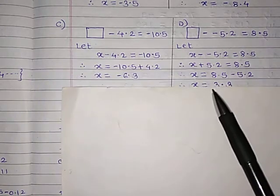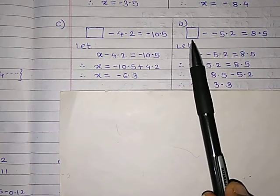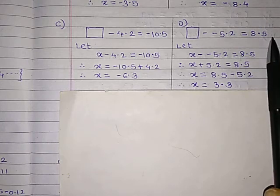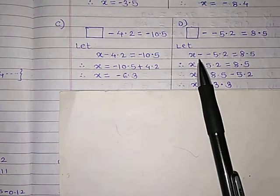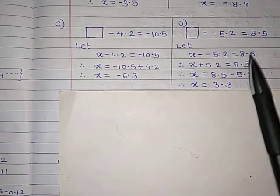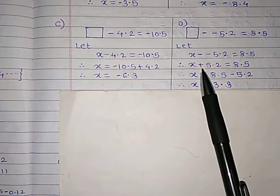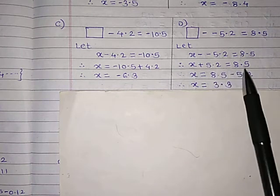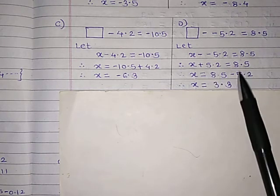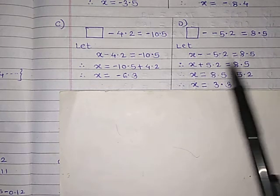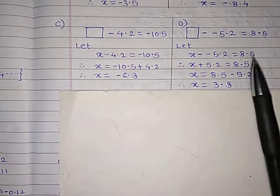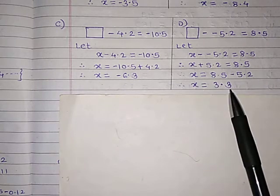Next: dash minus minus 5.2 equals 8.5. Let x minus minus 5.2 equals 8.5. Minus and minus becomes plus, so x plus 5.2 equals 8.5. Therefore x equals 8.5 minus 5.2. When we shift 5.2 to the right it becomes minus 5.2. So x equals 3.3, since 5 minus 2 is 3 and 8 minus 5 is 3.